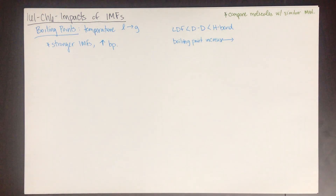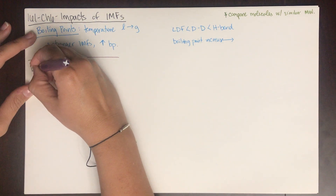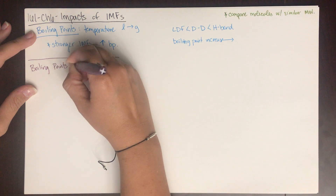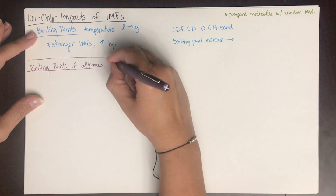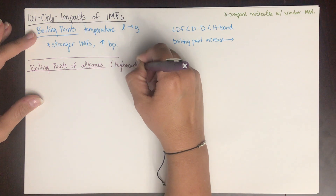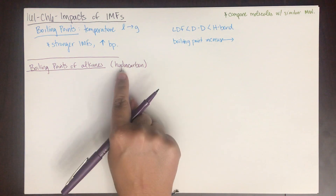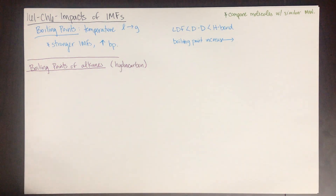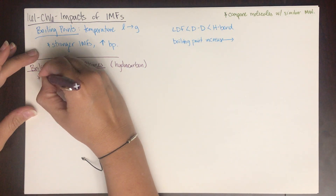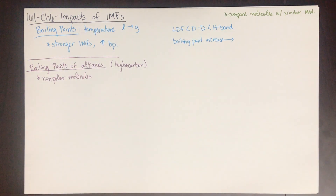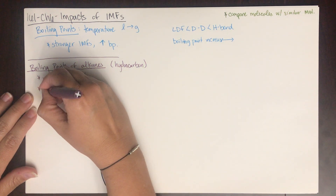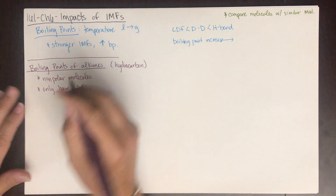Now let's look at boiling points of alkanes specifically. An alkane, from organic chemistry, is a hydrocarbon — a molecule made up of only hydrogens and carbons. Hydrocarbons are non-polar molecules, so they only have London dispersion forces as their intermolecular forces.